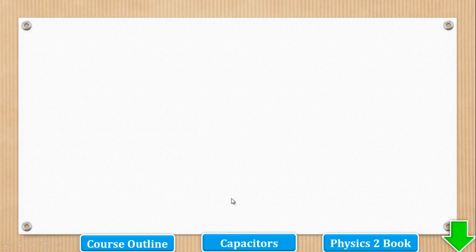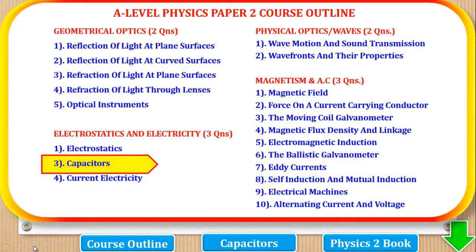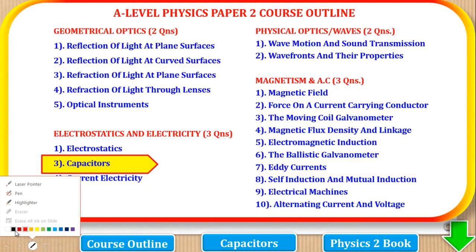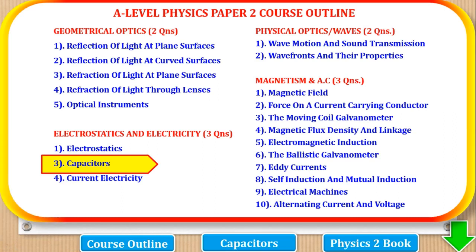Before we start, let's first look at the course outline for physics paper 2. Physics paper 2 is divided into 4 parts. The first part is geometrical optics, where 2 questions come from these topics and a student must answer 1.